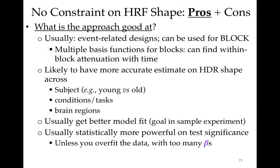This variable-shape approach is well suited for event-related designs where a single event — perhaps a video followed by a choice — takes several seconds to play out. In block designs with rapidly presented events, shape differences tend to average out and you can't recover individual event shapes. One could also allow for within-block attenuation in time, but you need a scientific reason to analyze data in a particular way, not just because something might happen.